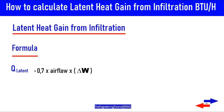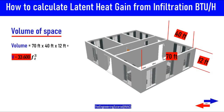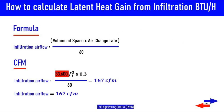The equation used to estimate the latent heat gain from infiltration is: QL equals 0.7 times airflow times delta W. In our example, we calculated an office space with a volume of 33,600 cubic feet, which gave us an infiltration airflow rate of 167 CFM using the air change method.